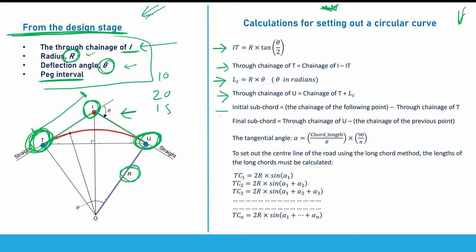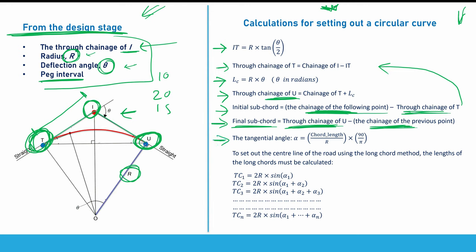Then you need to calculate the initial subchord length, which is the chainage of the following point after T minus the true chainage of T. And then the final subchord, which is the true chainage of U minus the chainage of the previous point before U. I'll go through these in detail when we solve the example. Once you have the initial and final subchords, you calculate the tangential angles, and then the long chord lengths using the given relations.